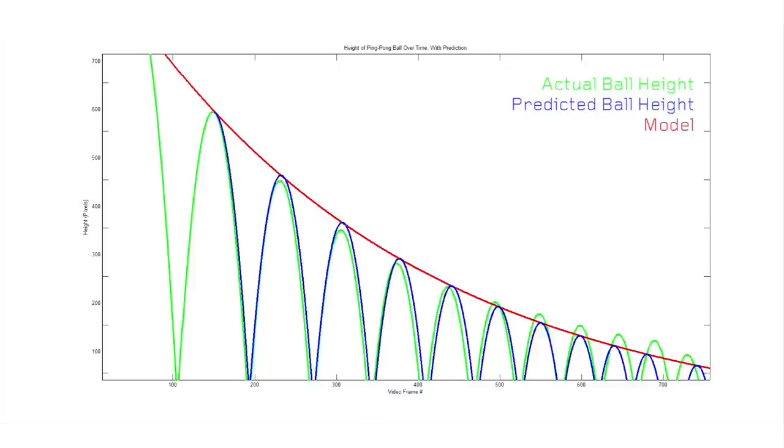The blue curves here represent the predicted path. The prediction is very accurate for up to about 8 bounces when it begins to deviate as the rotation and small changes in direction of the ball have a larger effect.